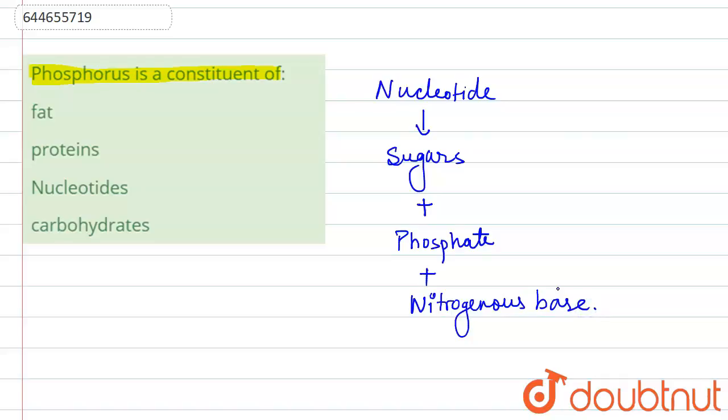The nucleotide is the union of this phosphate group plus nitrogenous bases plus sugars. And in the question, as phosphorus is the constituent of, so phosphorus is the constituent of the nucleotide.